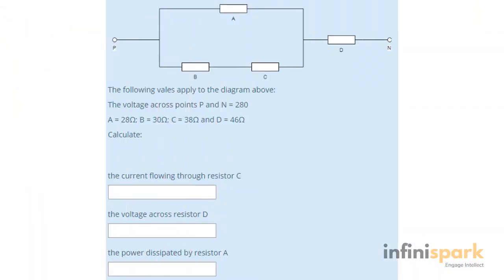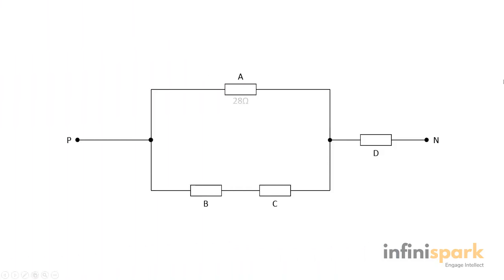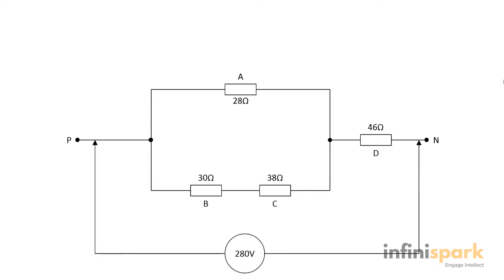Here is the DC circuits question that I will solve in this video. Always start by writing the values on the circuit. Here A is 28 ohms, B is 30 ohms, C is 38 ohms, D is 46 ohms, and the voltage across points P and N is 280 volts. We have been asked to find current through resistor C (IC), voltage across resistor D (VD), and the power dissipated by resistor A (PA).